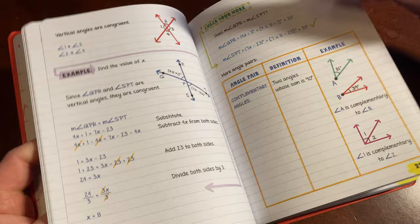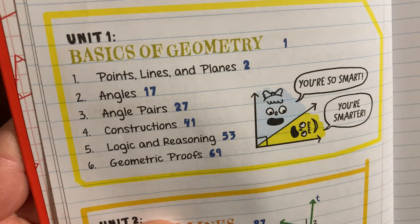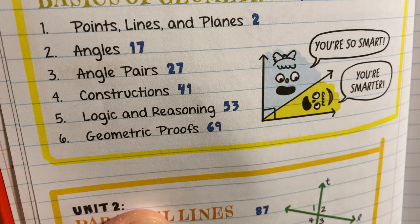Unit 1, Basics of Geometry: Points, lines, and planes; Angles; Angle pairs; Constructions; Logic and reasoning.